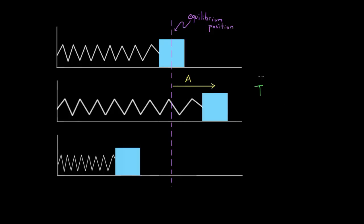It's a little less obvious what the period depends on. Who or what determines the period? Maybe it depends on the amplitude — so let's check. If I pulled this mass back farther, increasing the amplitude, would that change the period of this motion?